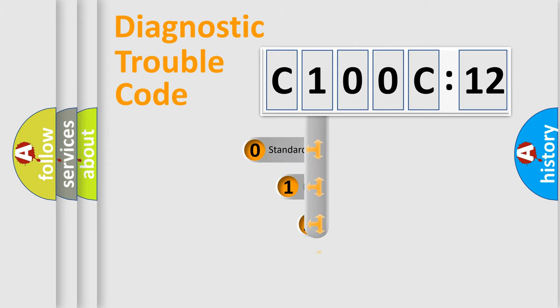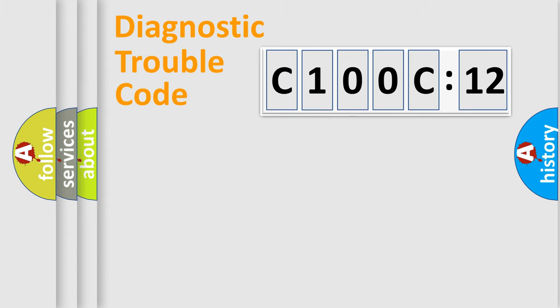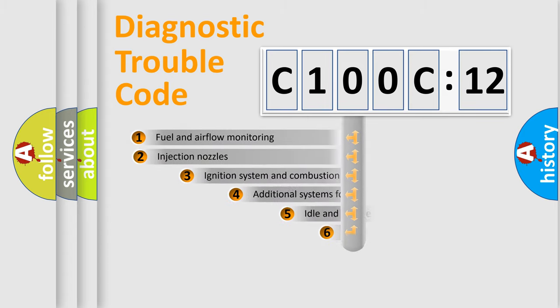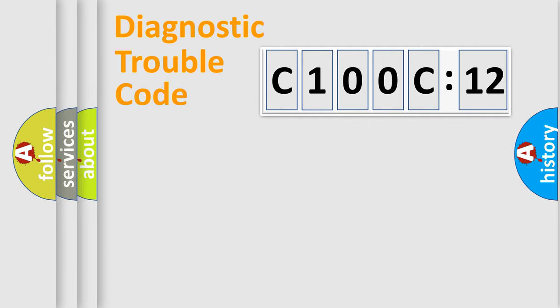This distribution is defined in the first character code. If the second character is expressed as zero, it is a standardized error. In the case of numbers 1, 2, 3, it is a car-specific error. The third character specifies a subset of errors. The distribution shown is valid only for the standardized DTC code. Only the last two characters define the specific fault of the group.